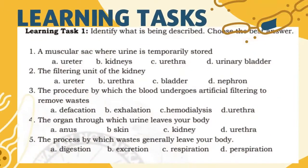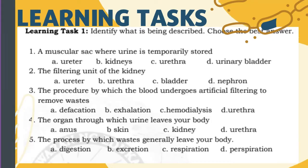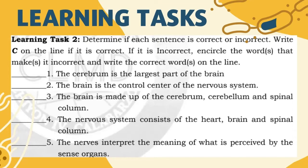Now let us proceed with our learning tasks. Learning task 1: identify what is being described — choose the best answer and select the correct letter. Learning task 2: encircle the words that make it incorrect and write the correct word or words on the line. Good luck with learning task number two.